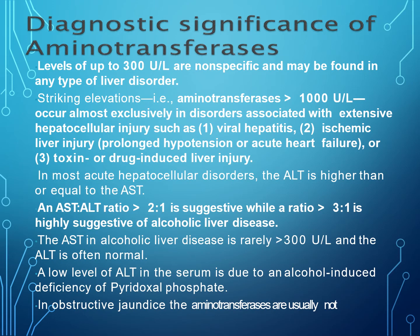These elevated levels are seen in viral hepatitis, ischemic liver injury due to prolonged hypotension or acute heart failure, or toxin- and drug-induced hepatic cell injury. In most cases, ALT is higher than or equal to AST. An AST to ALT ratio less than 2:1 is suggestive, while a ratio above 3:1 is highly suggestive of alcoholic liver disease.